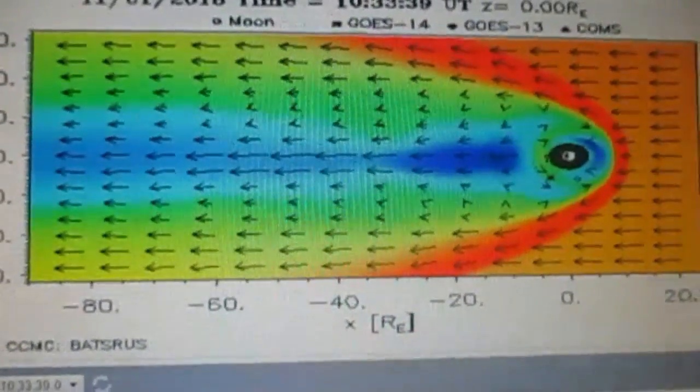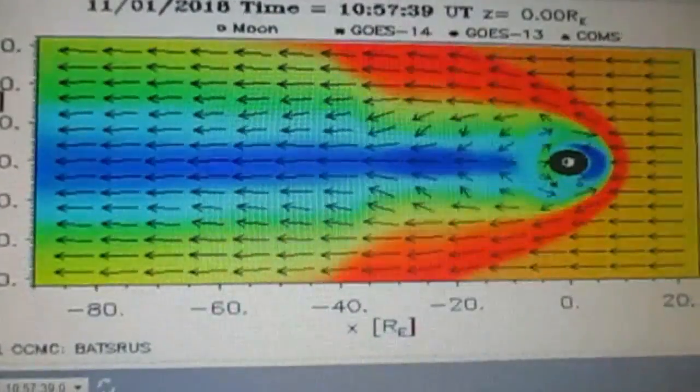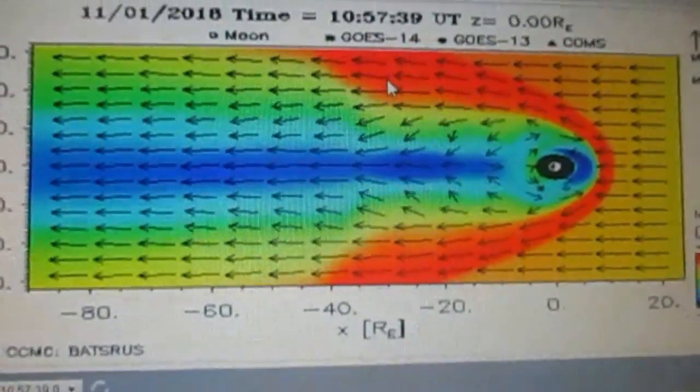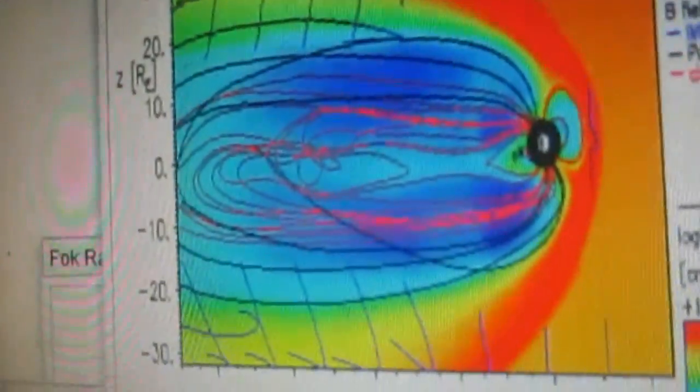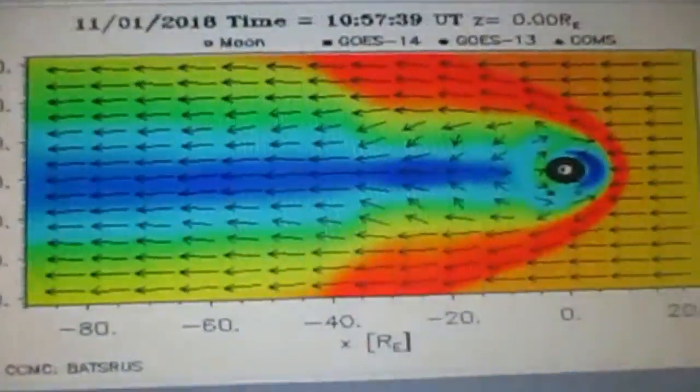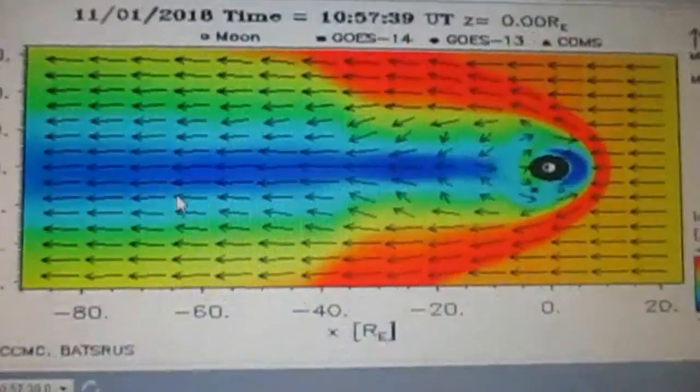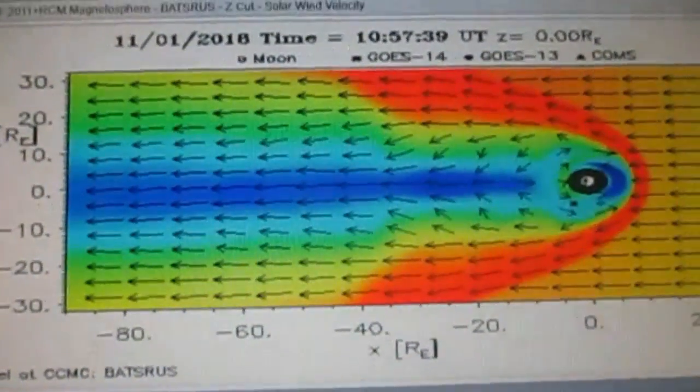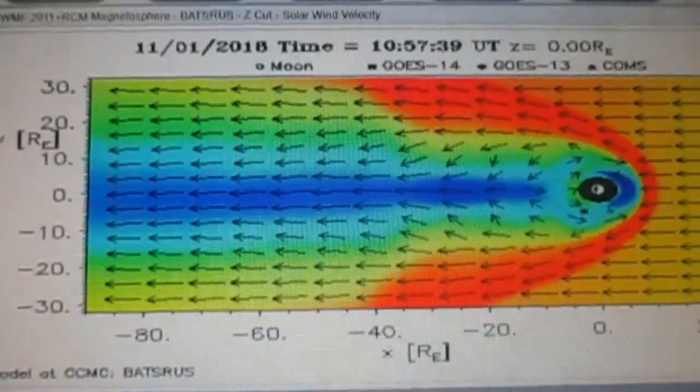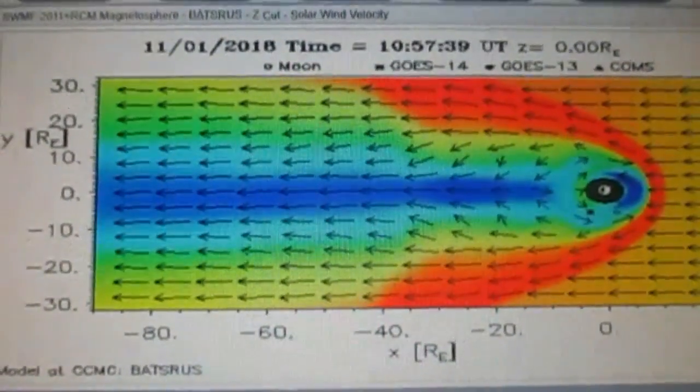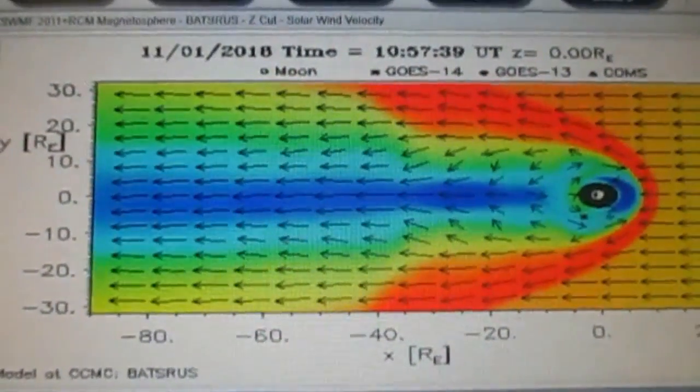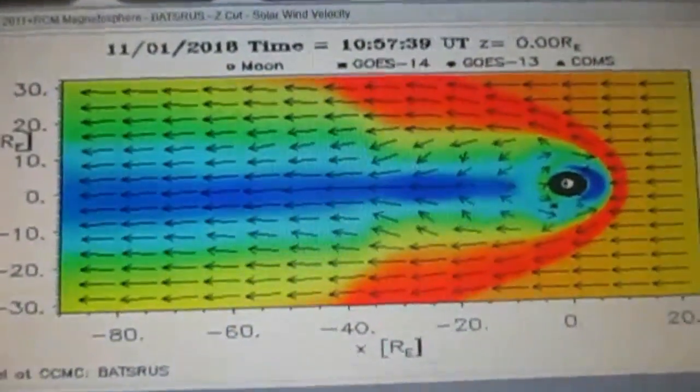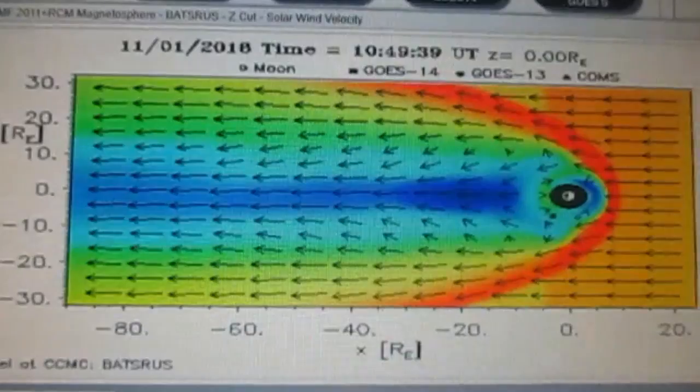So let's move this forward. Wow, look at that. That's exactly what I was showing you on this device. And now you can see it. It's happening. It's coming through on this device also. And this is called Batsrus Z-Cut Solar Wind Velocity. Wow.